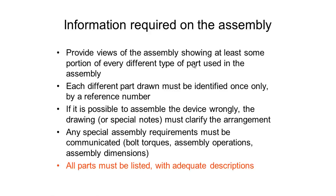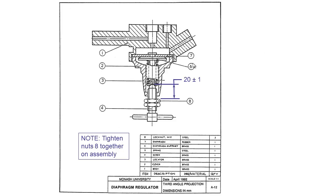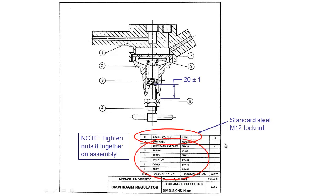All parts must be listed with adequate descriptions. Looking at part number eight — the lock nut — you can see it's specified as a lock nut and it's an M12 made of steel. That is enough information to go out and buy the correct part. One thing to note on this drawing is that the drawing and material columns, which were separate on one of our previous examples, are now combined. The rest of our information here refers to detailed drawings, so you'd refer to the detailed drawing for their full specification. Generally when doing this we'll split those into two: a drawing number column and a material column.